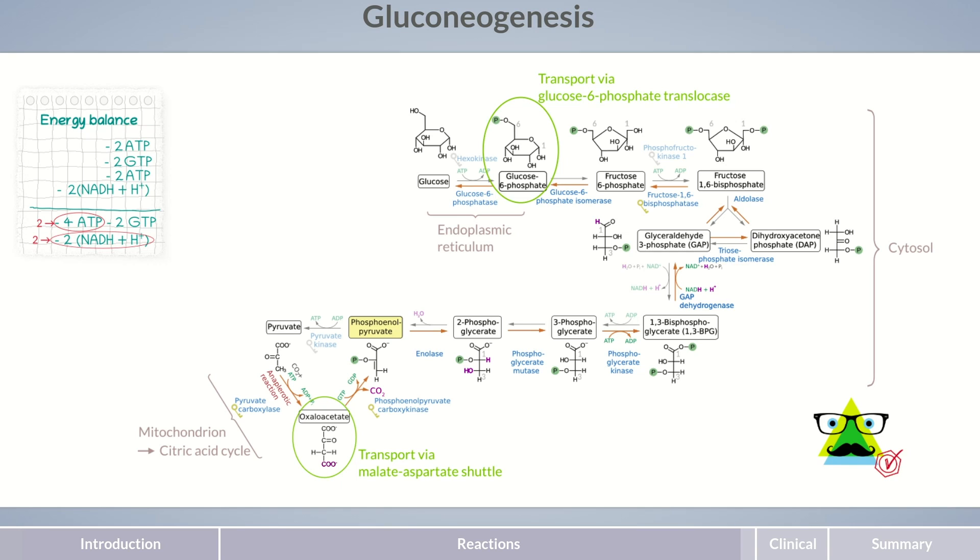In this case, gluconeogenesis ultimately consumes 2 molecules each of ATP and GTP. So if we look at gluconeogenesis from an energy perspective, it's a less efficient metabolic process.